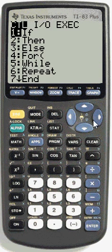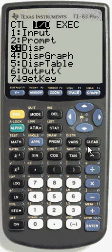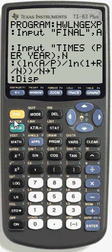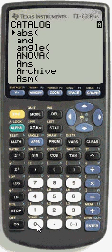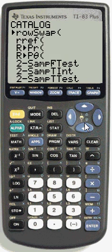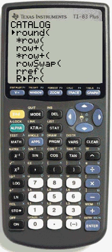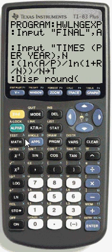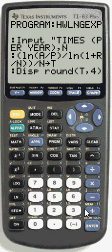Then we want program input output display. And we're going to again open up our catalog. Alpha. We're going to hit S to jump to that point. Go up eight. Scroll up eight selections. There's the round feature again. We are going to again choose T. Comma. And again we want that rounded to four decimal places.